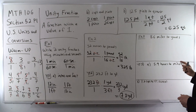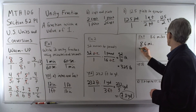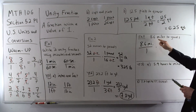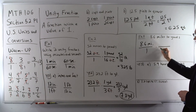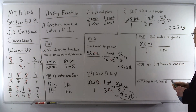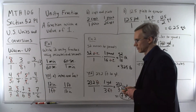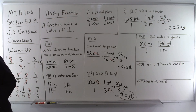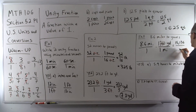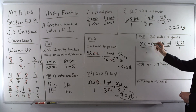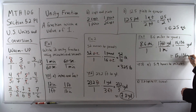Next example: 8.6 miles to yards. Take the initial quantity and put it over 1. We're converting to yards, so miles go on top, meaning we want one mile on the bottom. There are 1,760 yards in a mile. Multiplying out gives us 15,136 on top and 1 on the bottom — the miles cancel, leaving units of yards. So that's 15,136 yards.